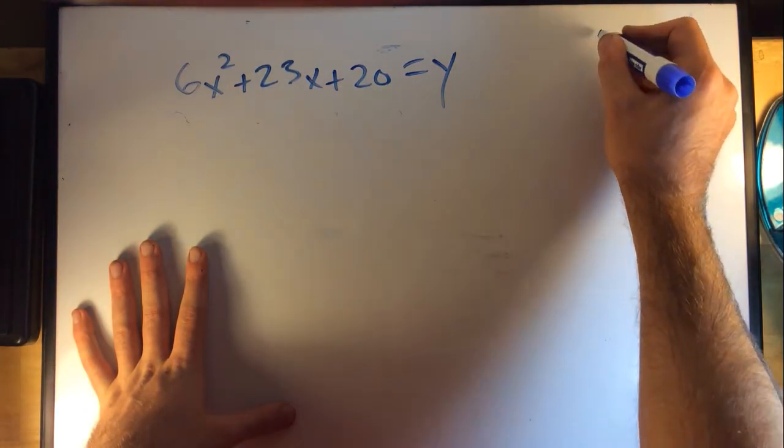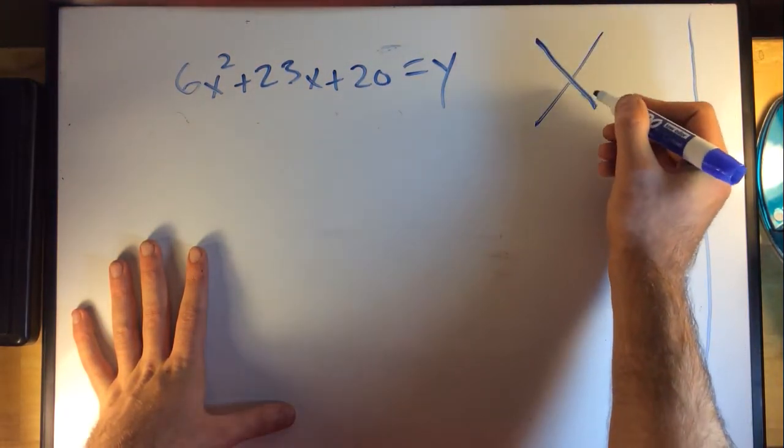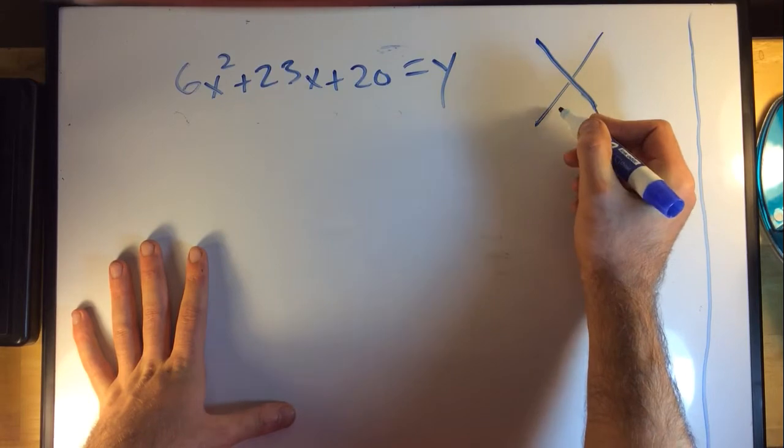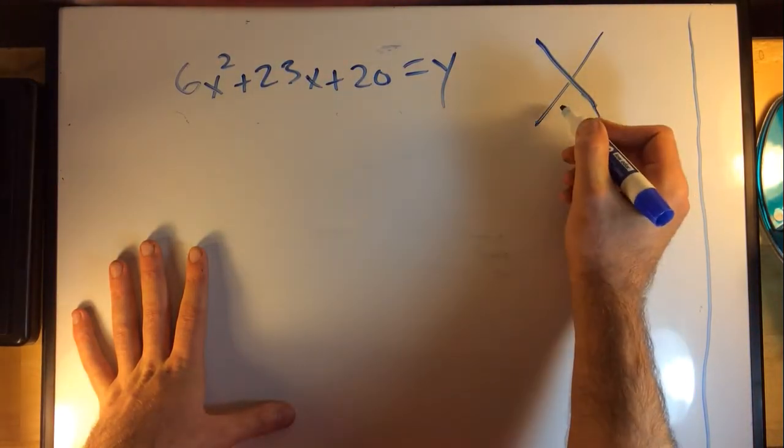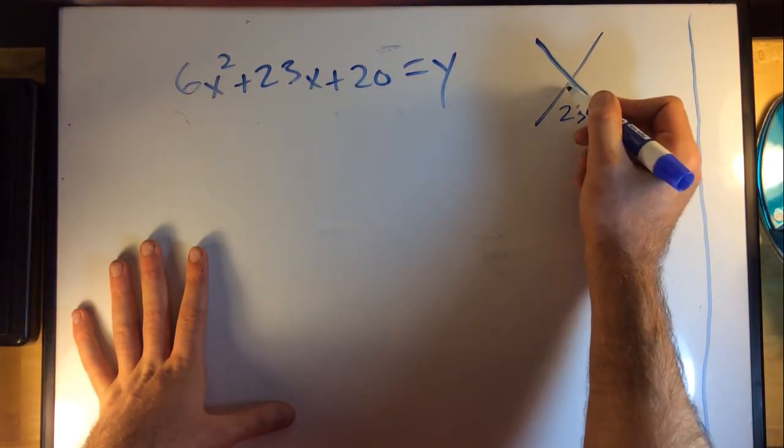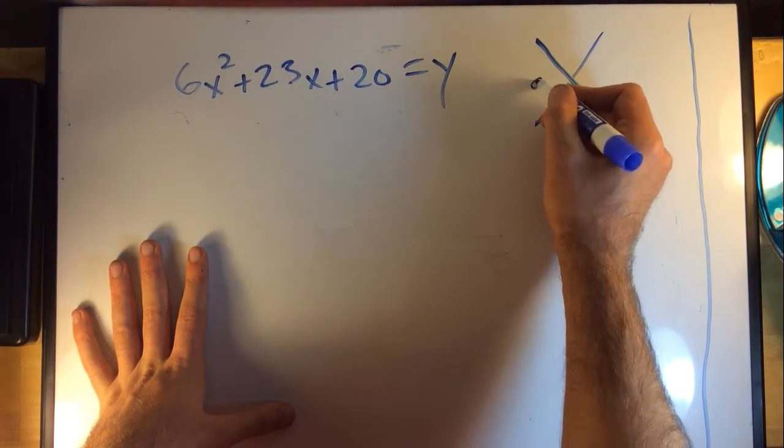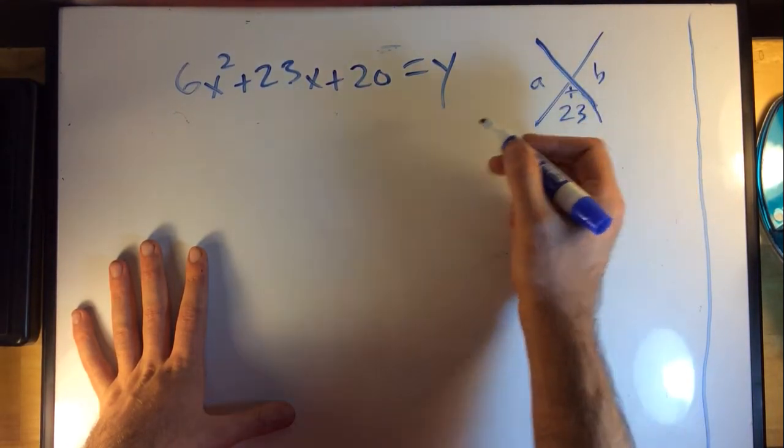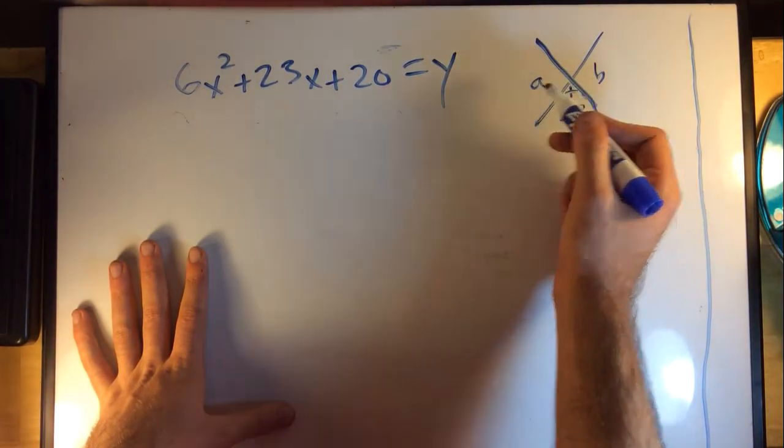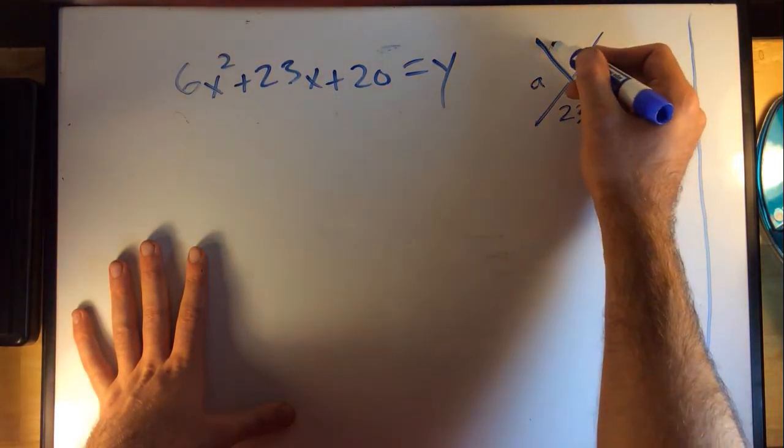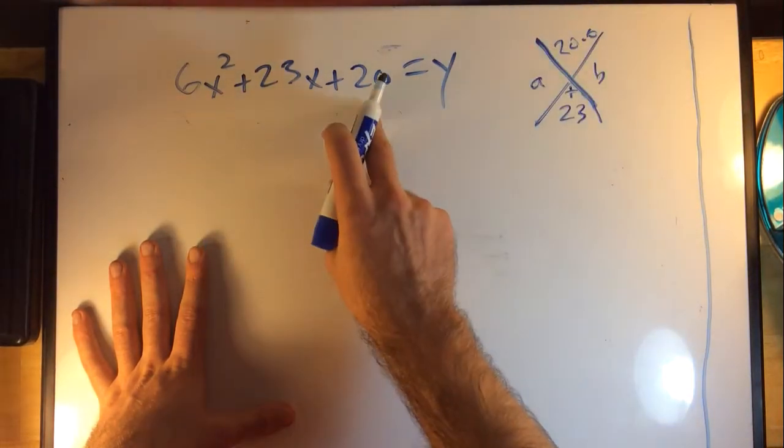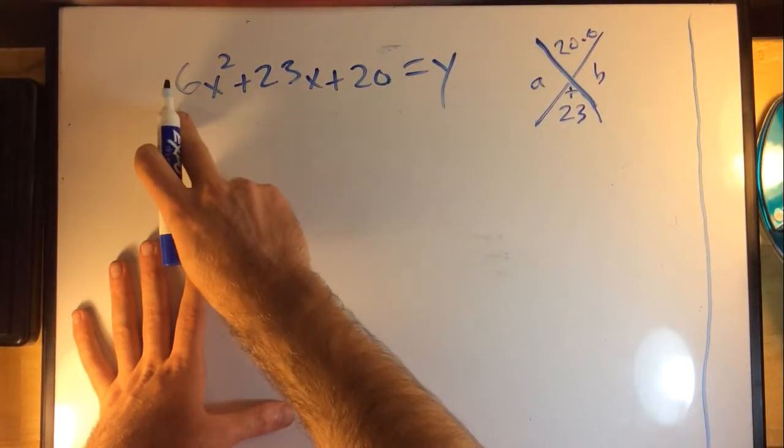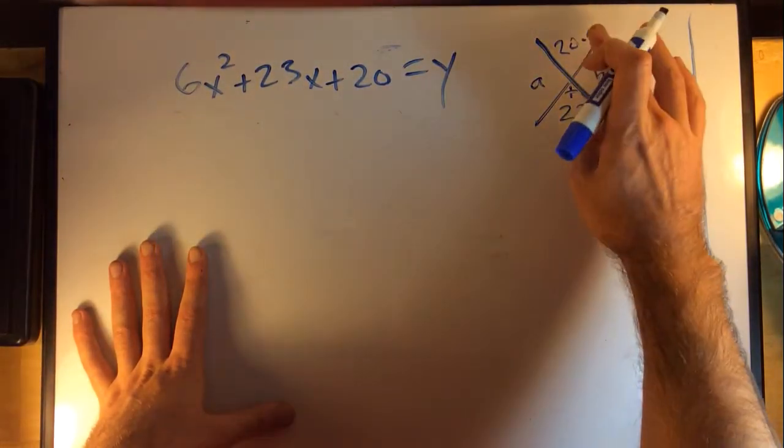The illegal move basically is just setting up our diamond. In the bottom we're gonna have our middle term, 23, and we have to find two terms a and b that when they add up equal 23, and when you multiply a and b they're going to equal 20 times 6. So our last term multiplied by the coefficient on our leading term, 20 times 6 gives us 120.